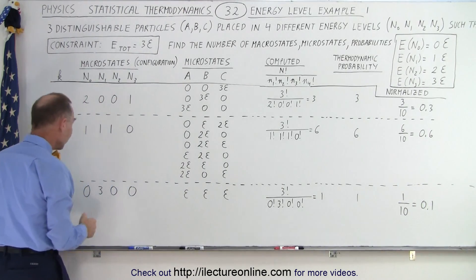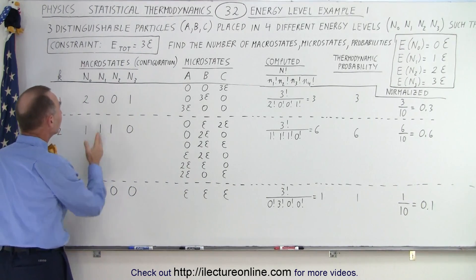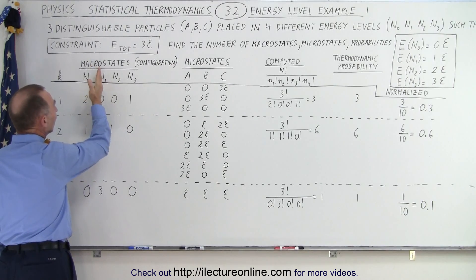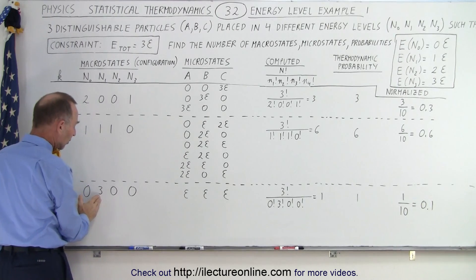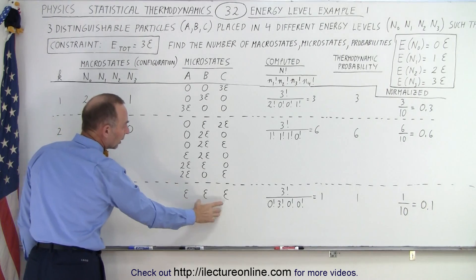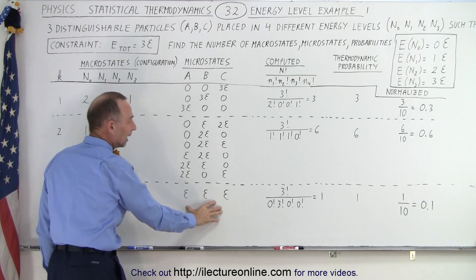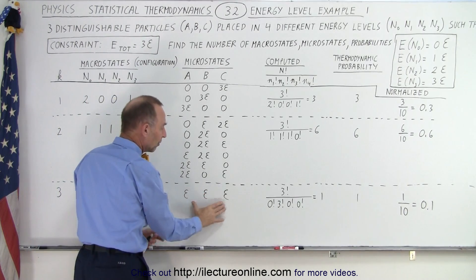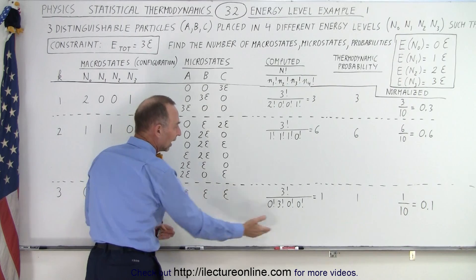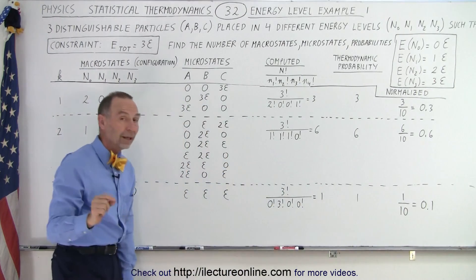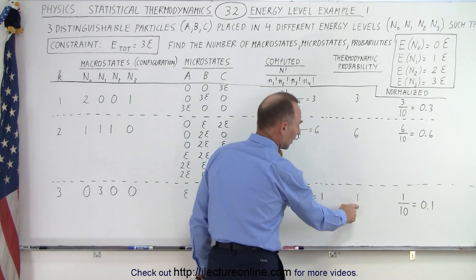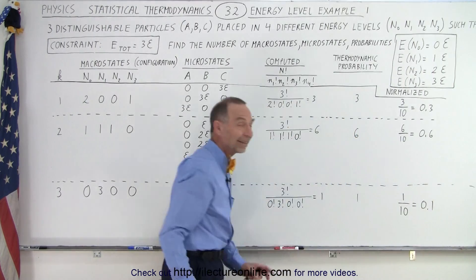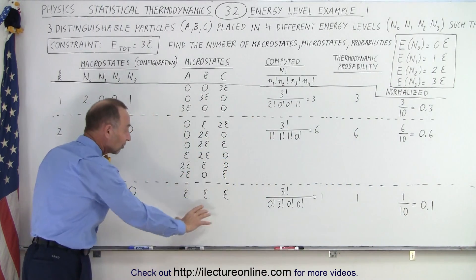Finally, we have a third configuration where all three particles could exist in the N1 energy level. In the N1 energy level, each electron would have one quantum of energy, so all three together have one, one, one — combining to three quantum energies. Mathematically, you can see that comes out to just one particular way this can be arranged. Therefore, the thermodynamic probability is one, or normalized, we see this configuration 10% of the time.